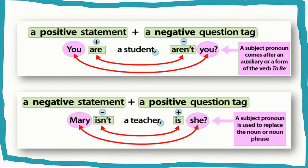A subject pronoun comes after an auxiliary or a form of the verb 'to be.' The positive is 'you are,' then the negative becomes 'aren't you' in a question tag. A negative statement is followed by a positive question tag: 'Mary isn't a teacher, is she?' A subject pronoun is used to replace the noun or noun phrase, so we change 'Mary' into 'she.'